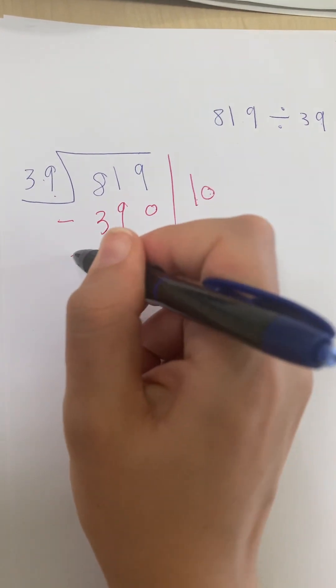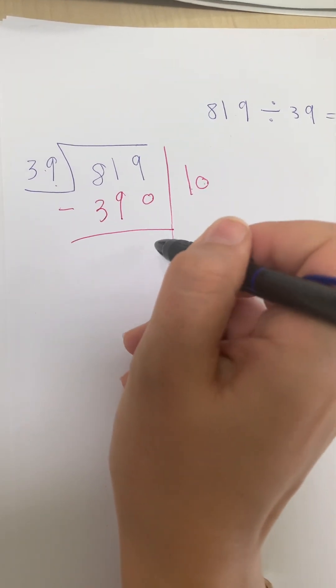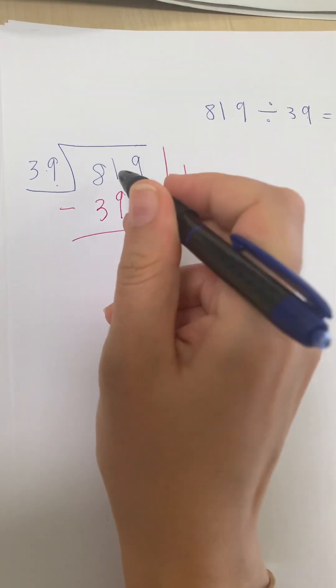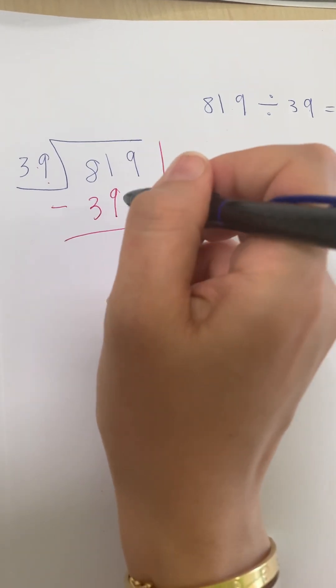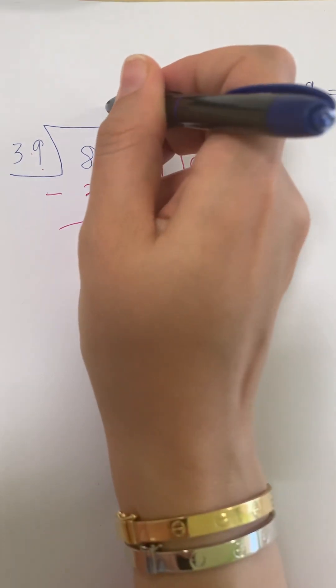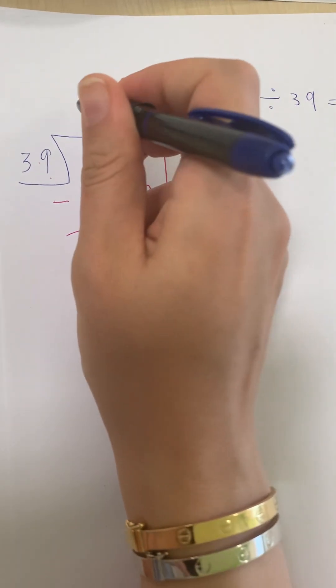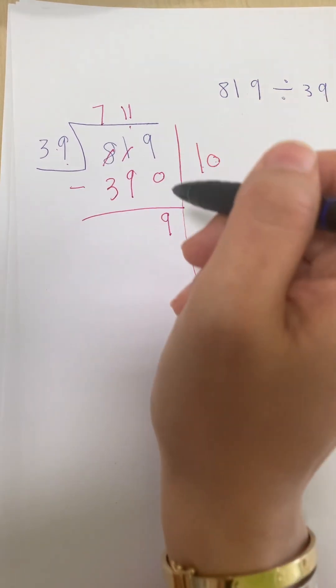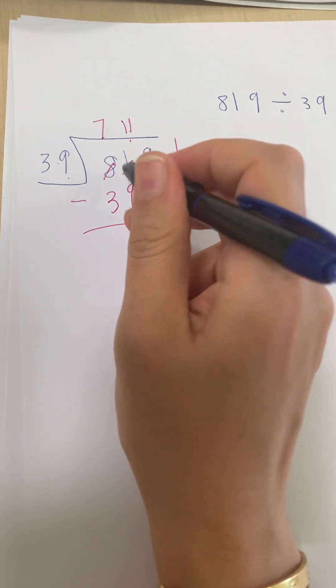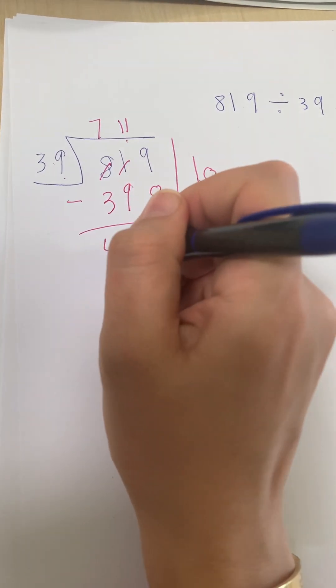Now I do minus. 9 minus 0 is 9. 1 minus 9 - I can't, so this becomes 11 and this becomes 7. 11 minus 9 is 2. 7 minus 3 equals 4.